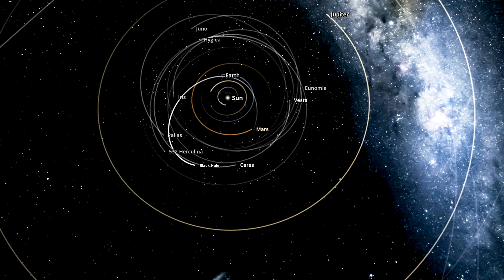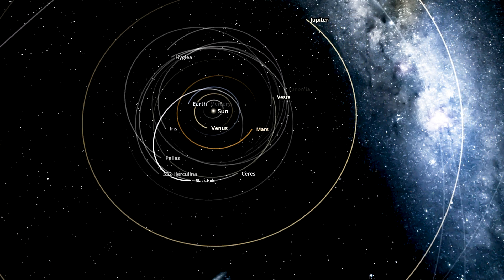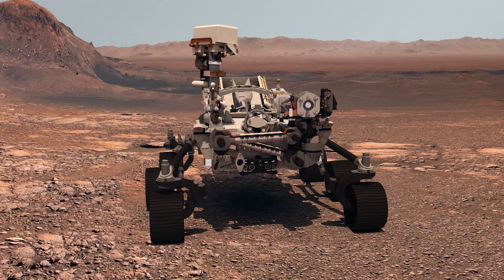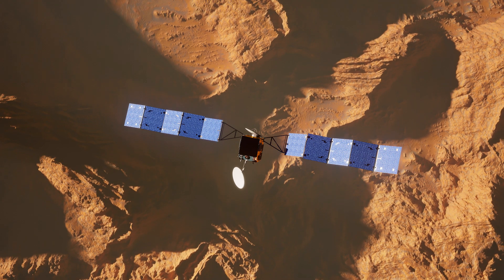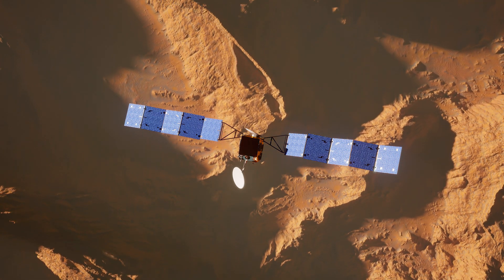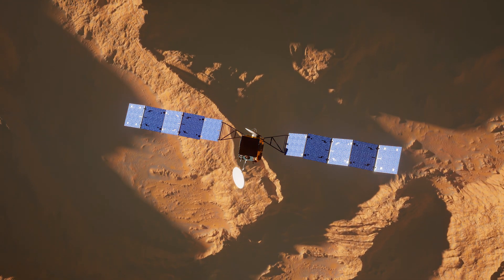These wobbles would be tiny, just a few feet over several years. But thanks to our advanced technology, like the rovers and orbiters monitoring Mars, scientists think we could catch this wobble if a black hole passed close enough.